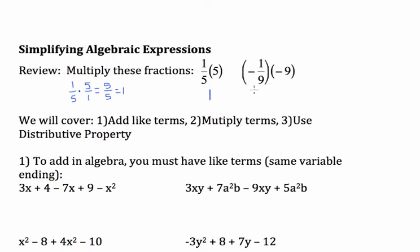Same thing here. Negative 1/9 times negative 9. First, the negatives. A negative times a negative makes a positive. So we'll have positive, and then 1/9 times 9 is 1. Again, 1/9 times 9 makes 1. So a lot of times we will just go straight to the answer.